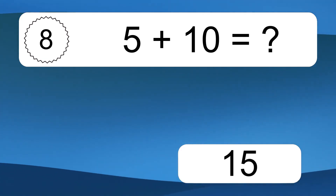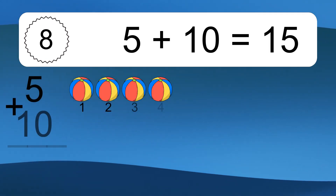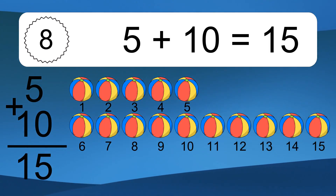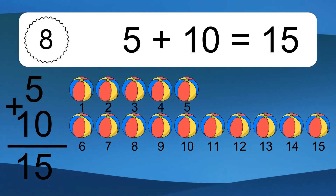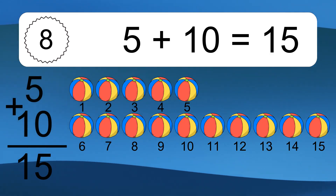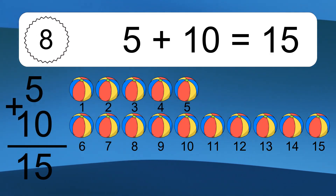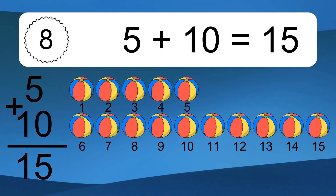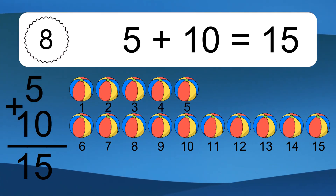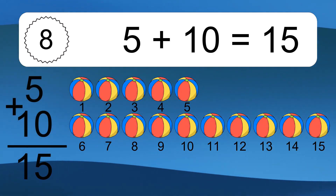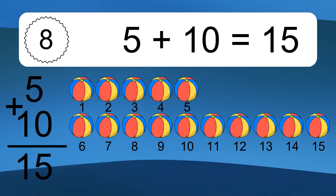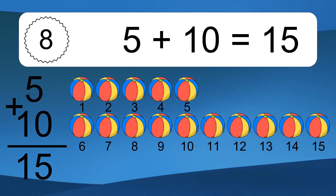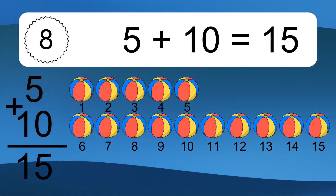5 plus 10 equals 15. Let's count it: 1, 2, 3, 4, 5, 6, 7, 8, 9, 10, 11, 12, 13, 14, 15.